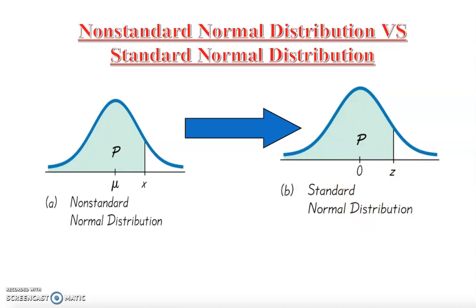In the last video we learned what a z-score is. The z-score formula is: z equals x minus the mean, divided by the standard deviation. In other words, it tells you how many standard deviations a data value is away from the mean — that is the meaning of z-score.